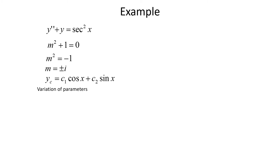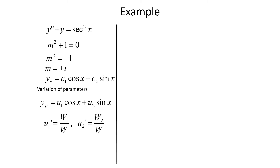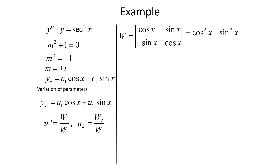To apply Variation of Parameters, we assume yp takes the same form but with u1 and u2 instead of c1 and c2: yp = u1·cos(x) + u2·sin(x). Now we find our Wronskians. W is the Wronskian of cos(x) and sin(x), with derivatives -sin(x) and cos(x). Computing the determinant: cos(x)·cos(x) minus (-sin(x))·sin(x) gives cos²(x) + sin²(x), which by the Pythagorean identity equals 1.